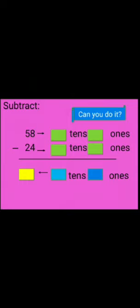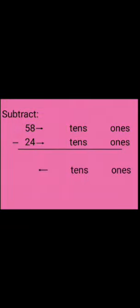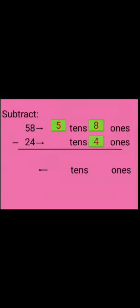Children, are you able to solve this question? 58 minus 24 in their expanded form. Now, first, we will expand the numbers. When we expand 58, we get 5 tens and 8 ones. For 24, we get 2 tens and 4 ones.